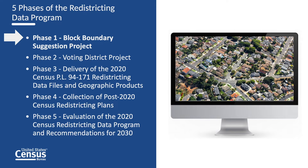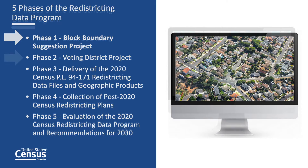Participation in Phase 1 of the Redistricting Data Program was conducted through the nonpartisan liaison designated by each state. Phase 1 was conducted in two cycles: an initial identification of the updates needed and a verification cycle to ensure the suggested updates were accurately applied.